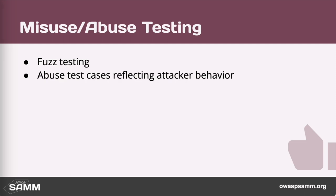Abuse test cases are reflecting on the attacker behavior, where we focus on finding unexpected design flaws and implementation bugs. It's about figuring out how the mechanism works and how one could disable it. Again, we're talking about security controls.